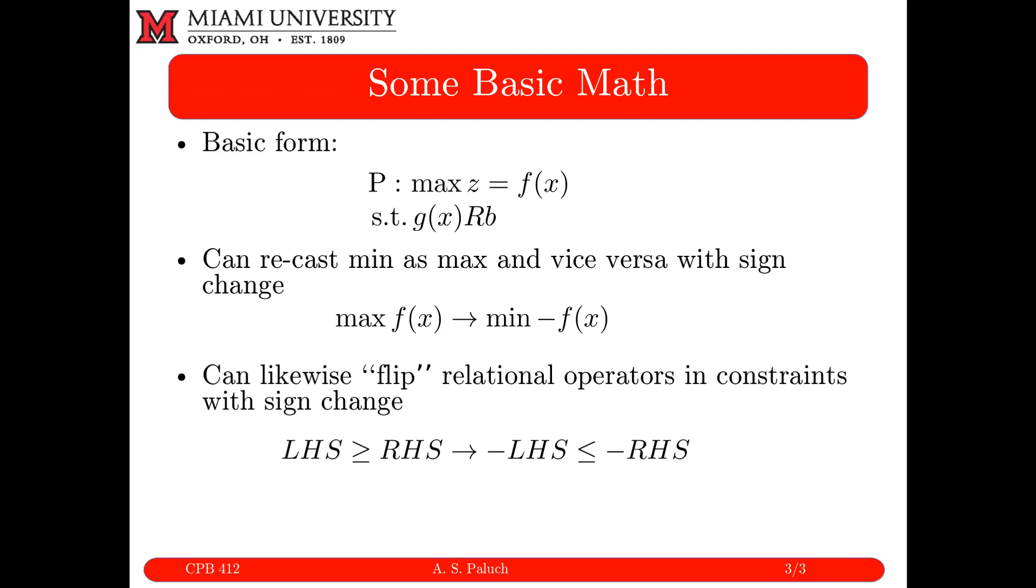you can readily convert or flip your operator. And so here would be if I multiply the left hand side and right hand side by negative one. What they would do is that would flip my operator. So while LHS, my left hand side is greater than or equal to my right hand side, the negative of my left hand side would be less than or equal to the negative of my right hand side. And so this gives me the ability to flip these operators so that if it needed to be flipped for a reason, typically when dealing with particular software that can only handle constraints in a given form, we can readily convert from one to the other.